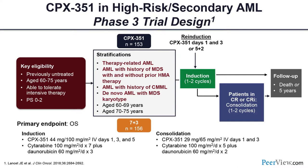Defining secondary AML for CPX-351 eligibility: Group one is therapy-related AML — lung cancer patients who had Taxol, breast cancer patients who had anthracycline, lymphoma patients — anyone with known prior malignancy treated with chemo and/or radiation who now has AML. Group two is known history of MDS with or without prior hypomethylating therapy. Group three — the hardest to identify — are patients with no known MDS, antecedent hematological disease, or prior chemo/radiation, but who present with new AML harboring MDS-associated cytogenetics like deletion 17, 5, or 7.